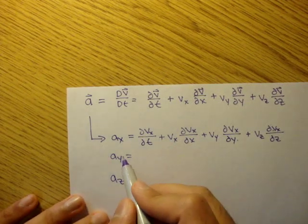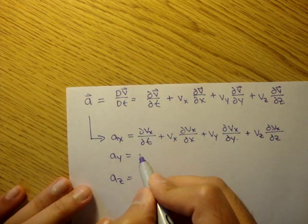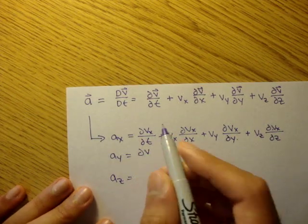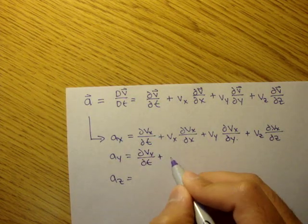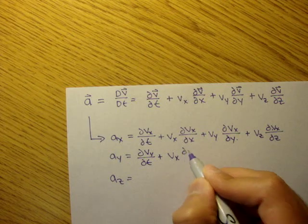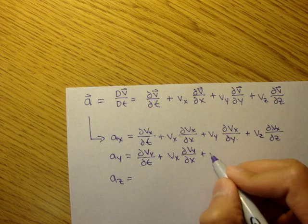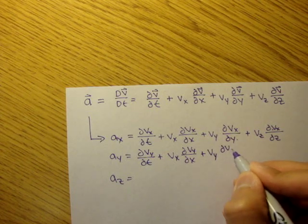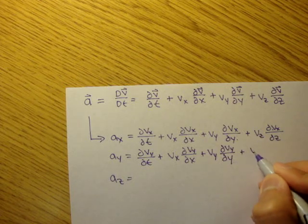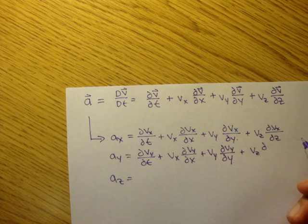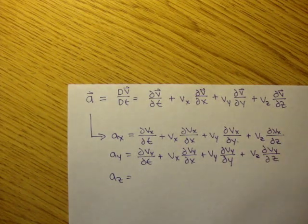Same thing for ay, but this time we're using the y-components of the velocity field. So it's the partial of vy with respect to t, plus vx times the partial of vy with respect to x, plus vy times the partial of vy with respect to y, plus vz times the partial of vy with respect to z.